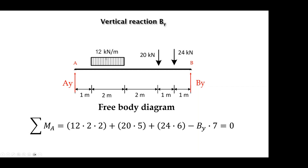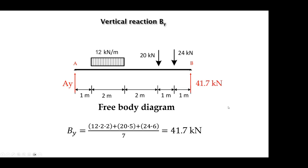The summation of moments around point A gives the moment produced by the external loads. The moment produced by the UDL is 12 multiplied by 2 (the length) multiplied by 2 meters (distance from the middle to point A). The moment of the 20 kN force is 20 multiplied by 5, and the 24 kN force gives 24 multiplied by 6. All these moments are positive because they produce positive rotations, minus the moment produced by reaction BY multiplied by 7. Setting this equal to zero gives BY equal to 41.7 kilonewtons.